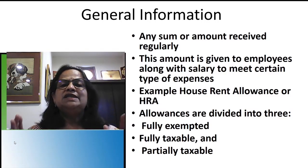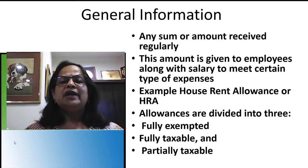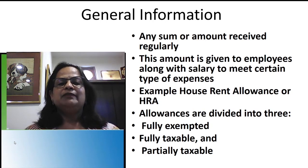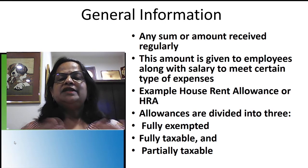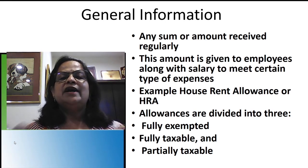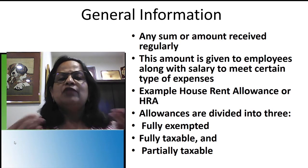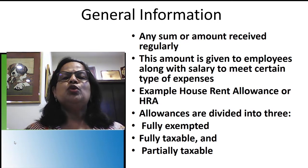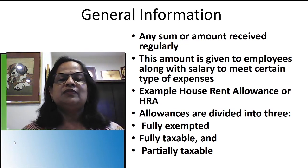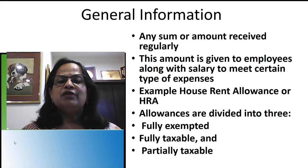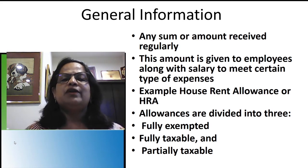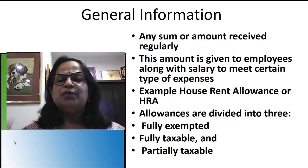An allowance is any sum or amount received regularly. When I get my salary, I get dearness allowance, house rent allowance, and city compensatory allowance because I live and work in Bangalore. If I work in Tumkur, I am not eligible for city compensatory allowance — that is allowed only for people working in a city. Dearness allowance and house rent allowance will be there for everyone.